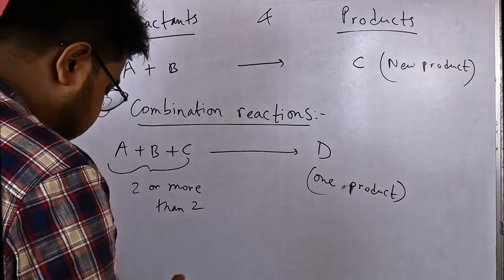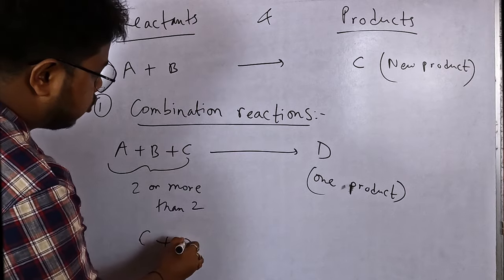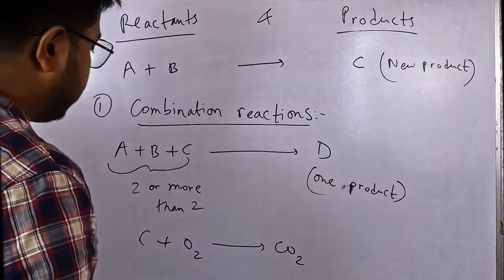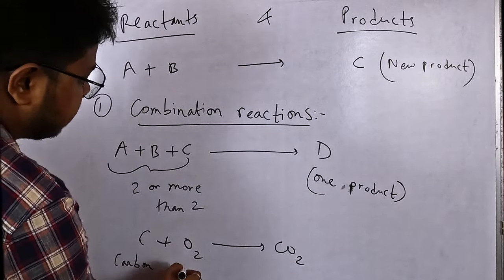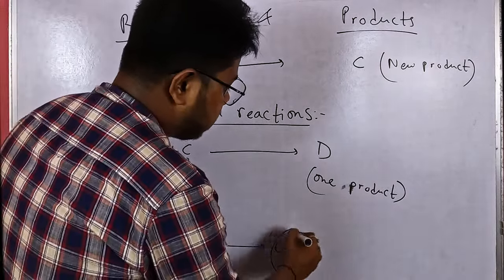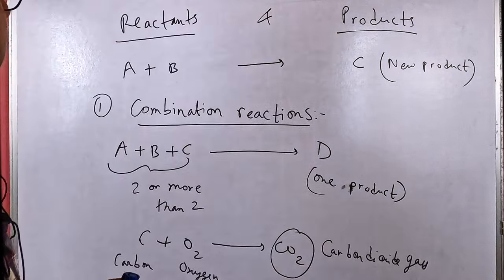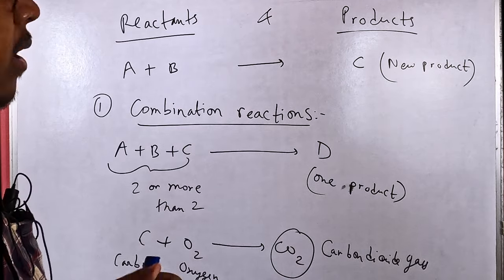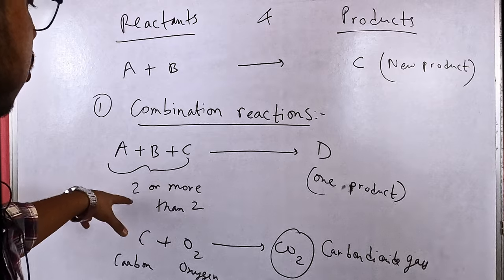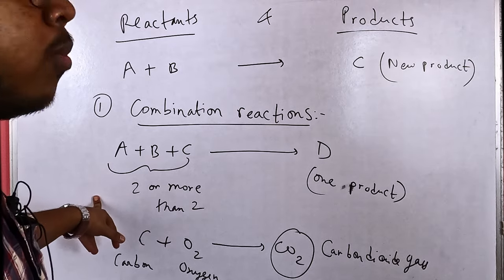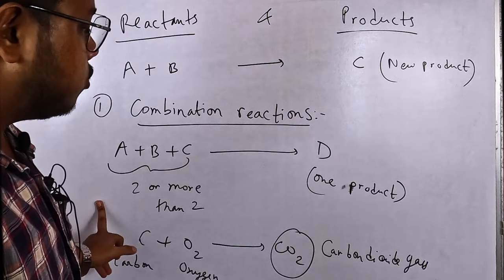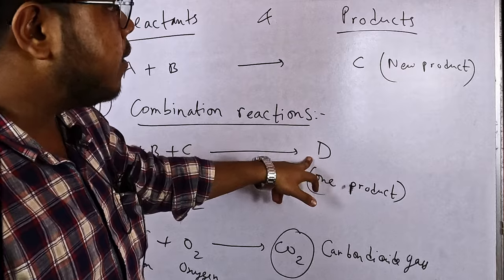For example, C plus O2 becomes CO2, that is carbon dioxide gas. Here, carbon and oxygen are combining with each other to form the new product carbon dioxide gas. This is a combination reaction, where two or more different types of reactants combine with each other to form a totally new type of product.